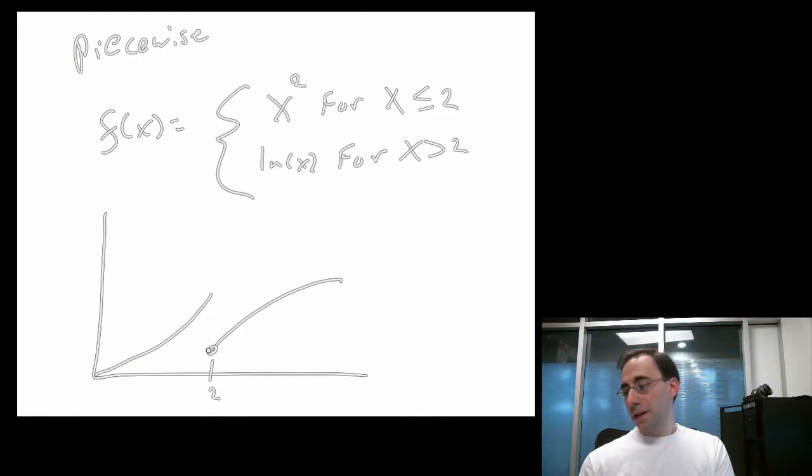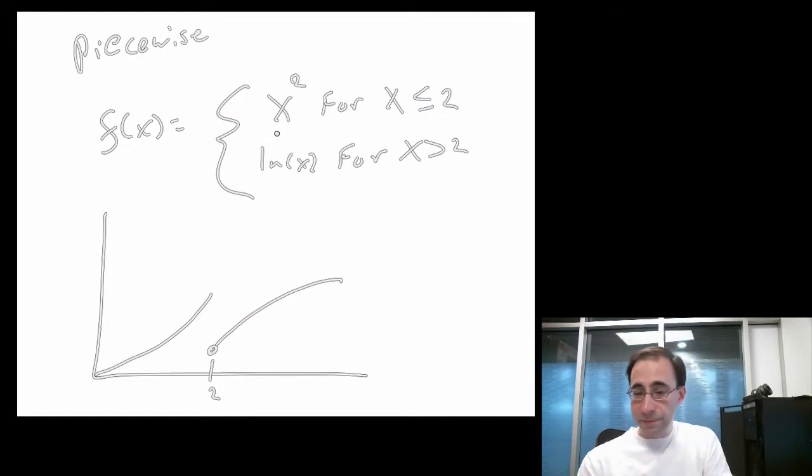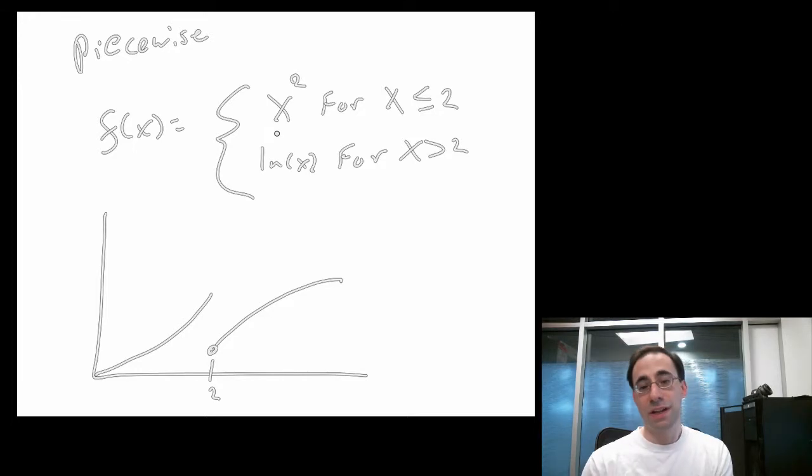It's defined piecewise because we believe that some fundamental behavior changes at a particular point. And the notation, you can have a 'for' here, you could put a colon instead of the 'for', lots of different ways. But this notation means it's defined differently on different parts of the domain. They're used primarily when you have some belief that behavior changes abruptly in some fashion before and after a certain point. There's sort of a discontinuity in behavior.